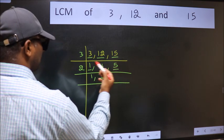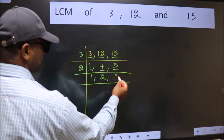The other number 5 not divisible by 2. So we write it down as it is.